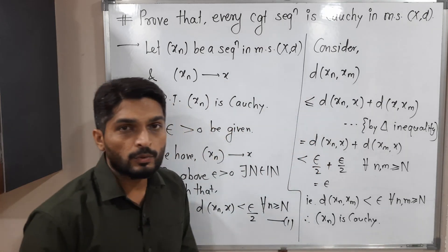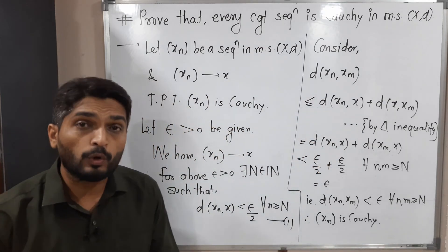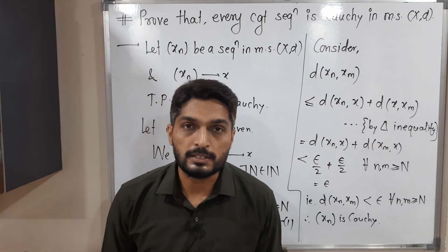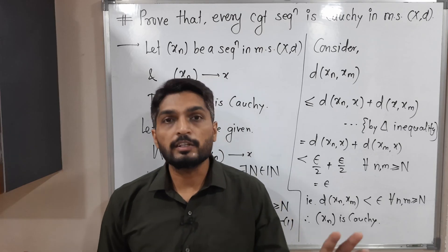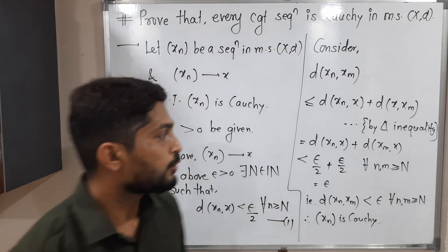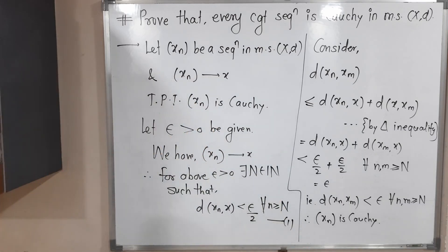In this way we proved that if you have any convergent sequence in a metric space, it is definitely a Cauchy sequence. Make a screenshot of it. Thank you, see you.